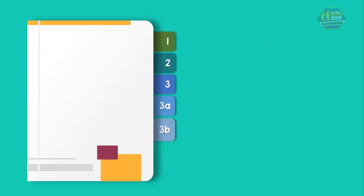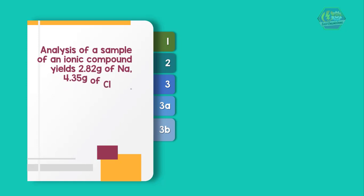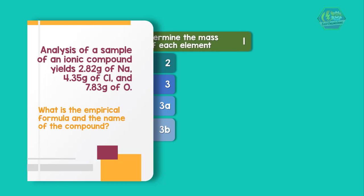Analysis of a sample of an ionic compound yields 2.82 grams of sodium, 4.35 grams of chlorine, and 7.83 grams of oxygen. What is the empirical formula and the name of the compound?